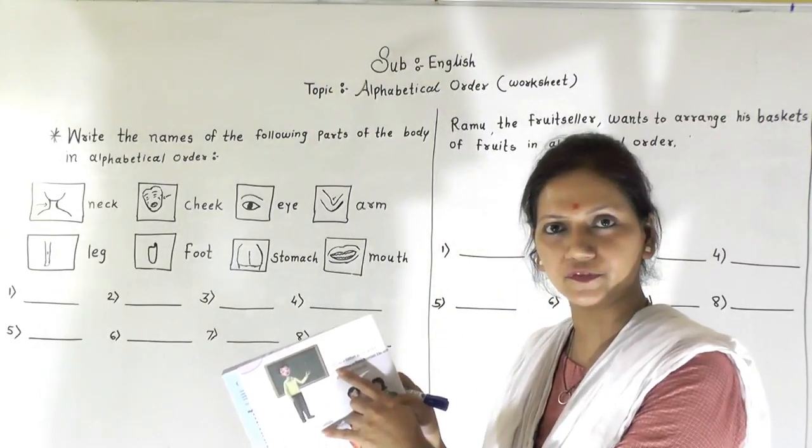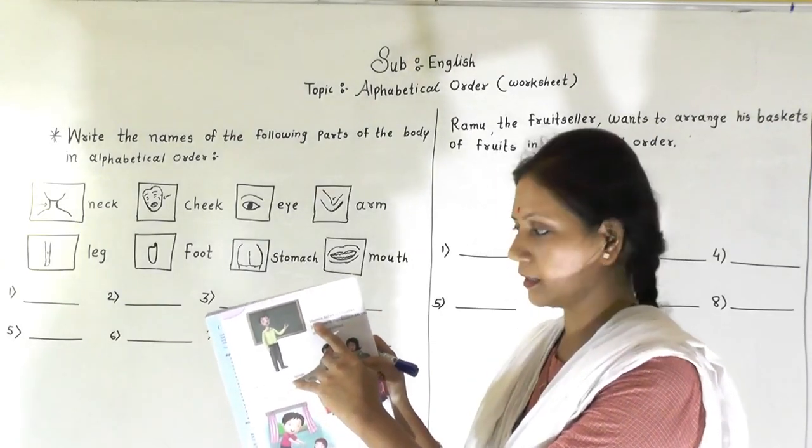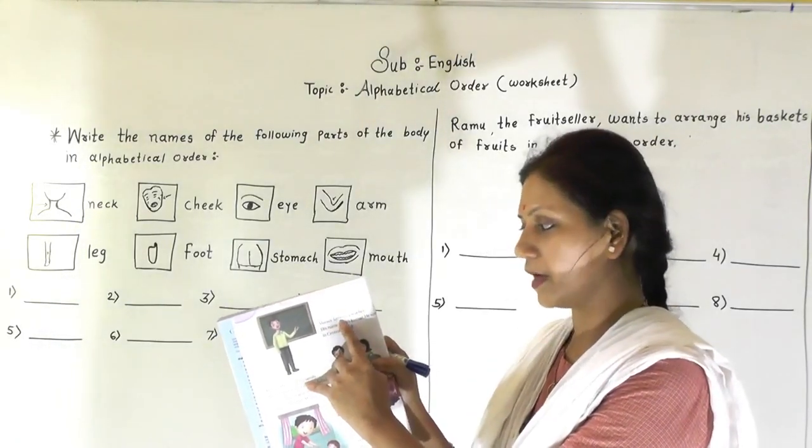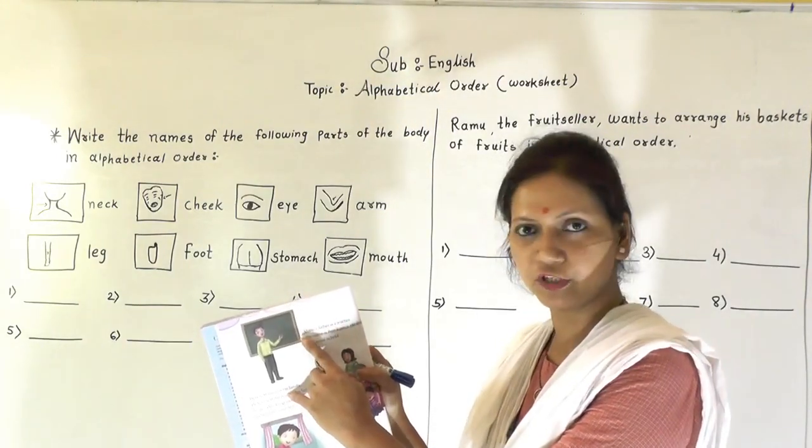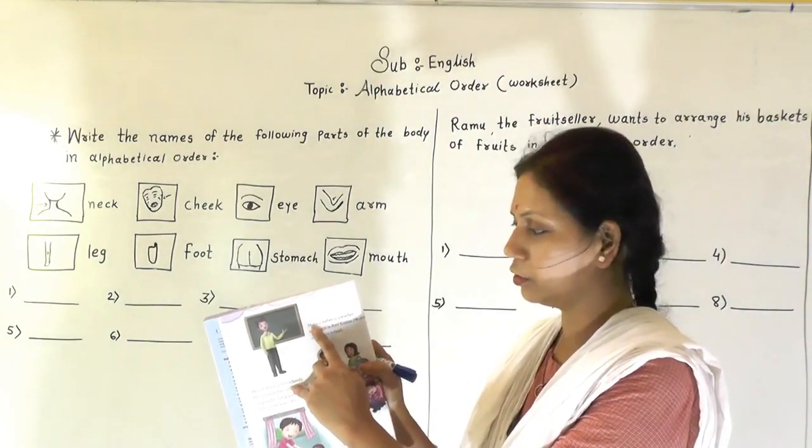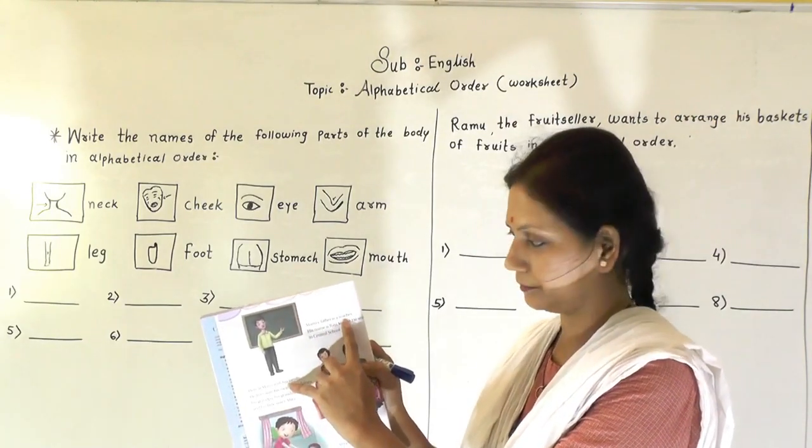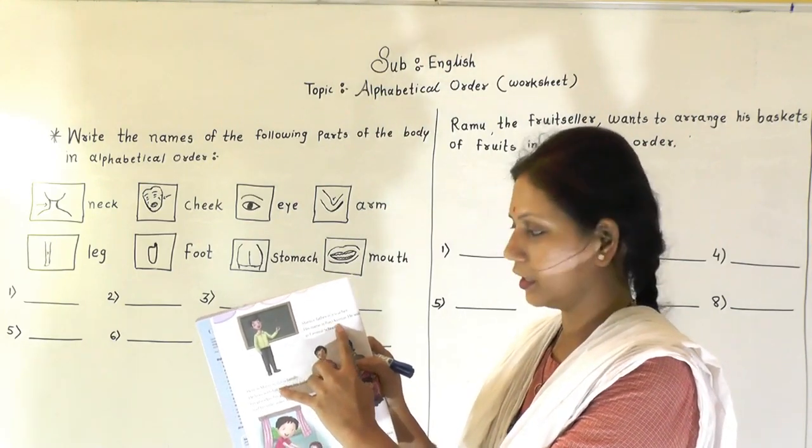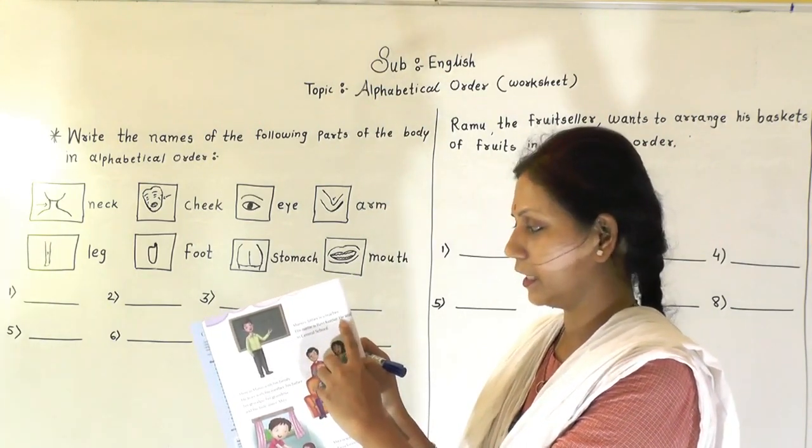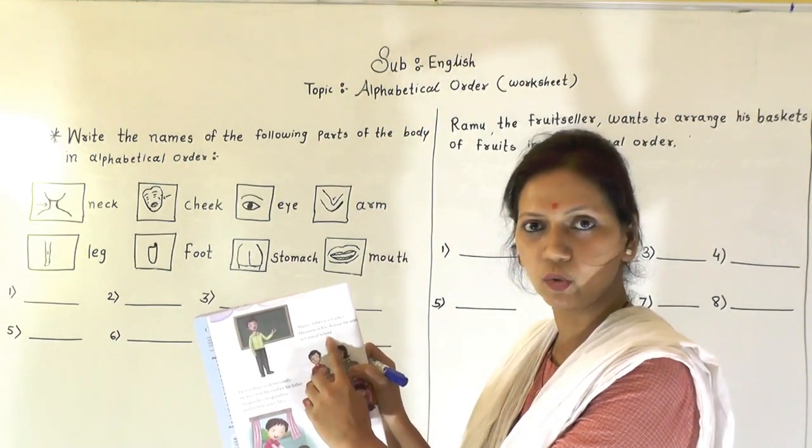So here you have to put your finger or a pencil. So the first word is Manu's. Manu's father is a teacher. His name is Ravi Kumar. He works in Central School.